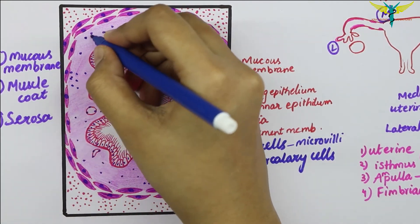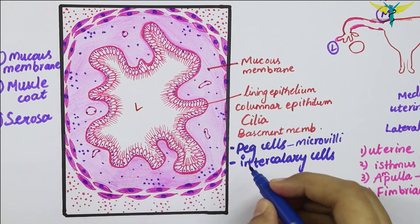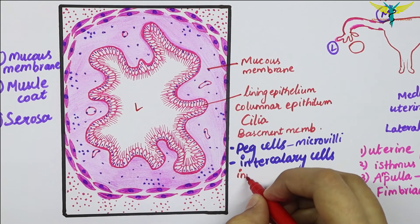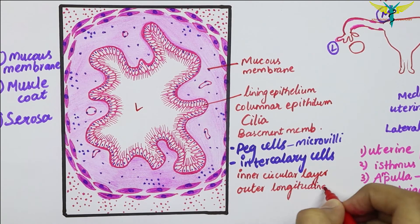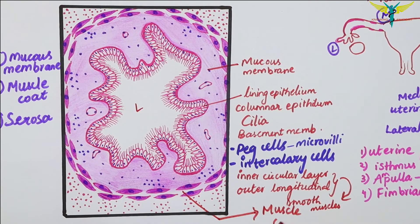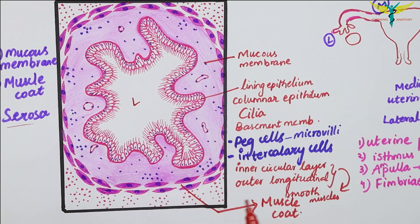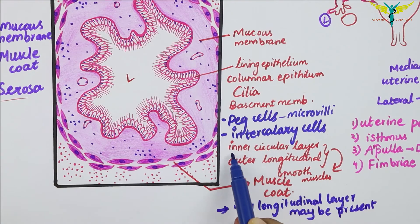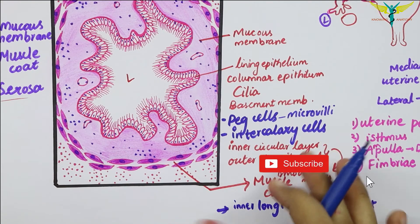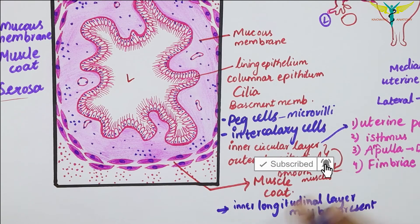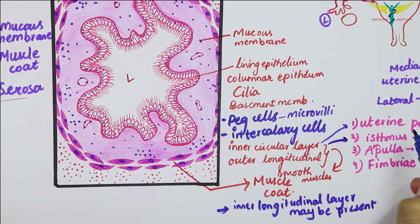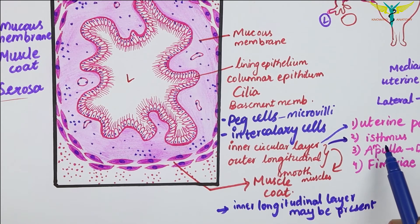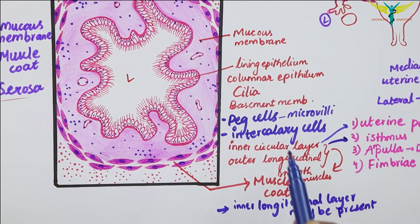The muscle coat contains the inner circular layer and the outer longitudinal layer of smooth muscles. Sometimes an inner longitudinal layer of the muscle coat is also present. The circular layer of the muscle coat is the thickest in the first part — the uterine part — and the inner circular layer is also very thick in the isthmus.